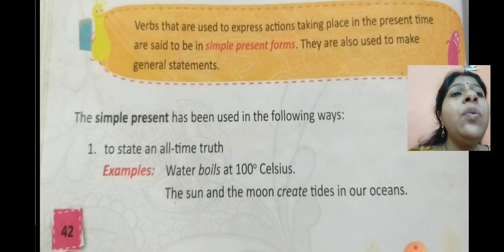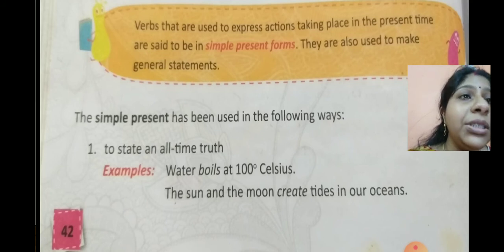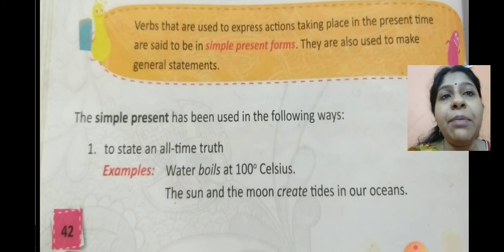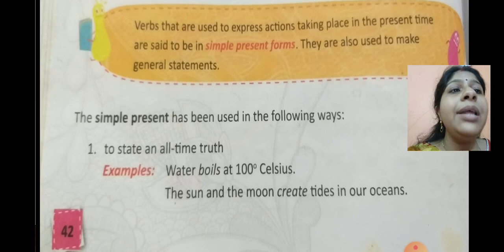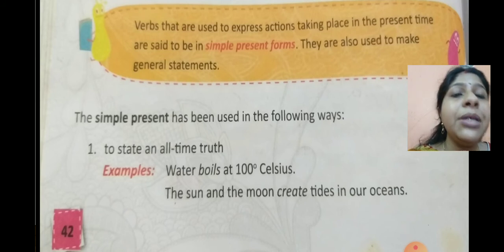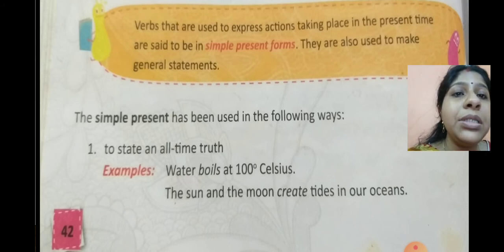Verbs that are used to express actions or talk about the present time are simple present forms. They are also used to make general statements. The simple present has been used in the following ways. Number 1: to state all-time truth.